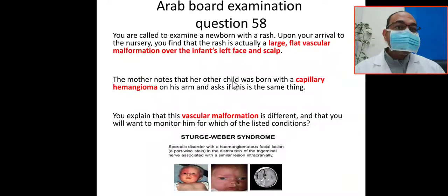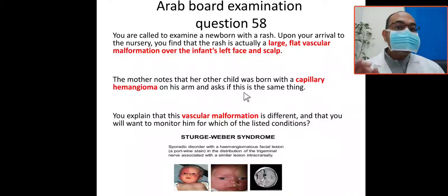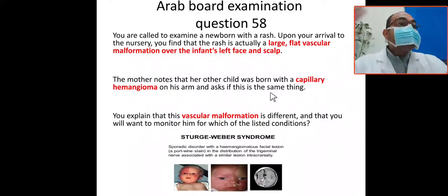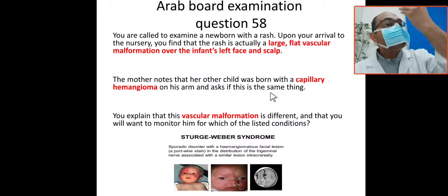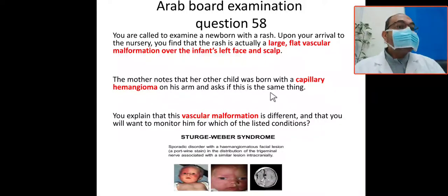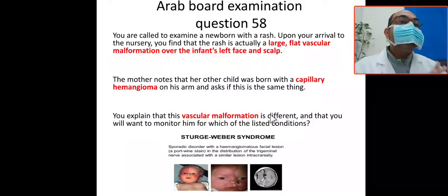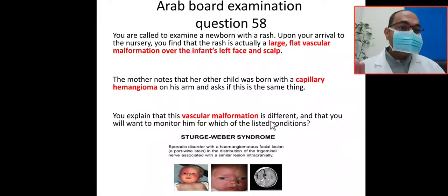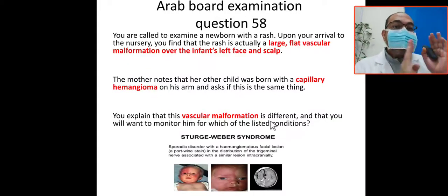After thoroughly examining the baby neurologically and neurocutaneously, you discuss the case with the mother. The mother mentions that her other child was born with a capillary hemangioma on his arm and asks if this is the same thing. You explain that this is a vascular malformation and it is actually totally different.